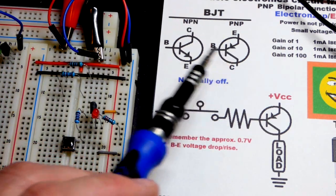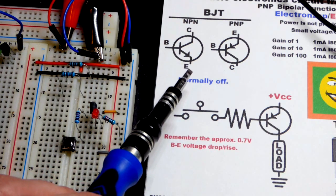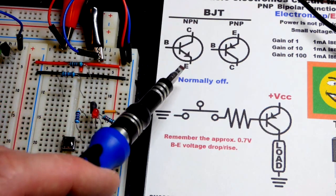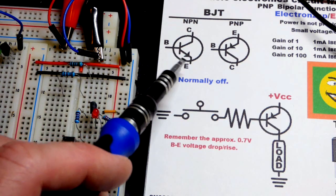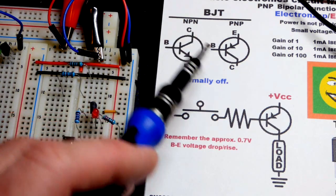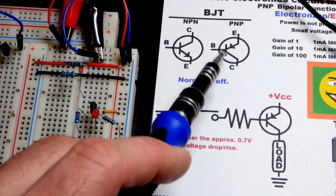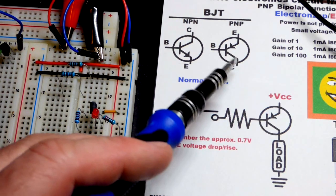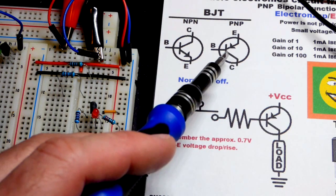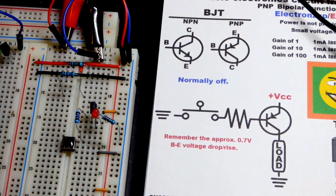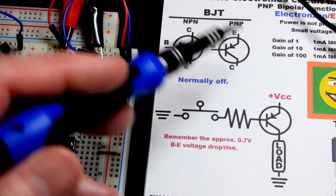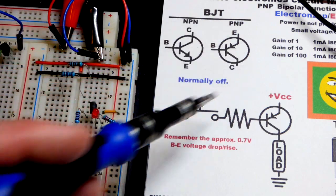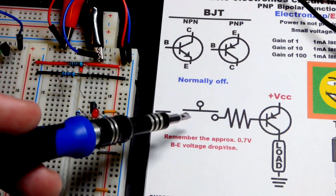You can see with the emitter here, for the NPN Bipolar Junction Transistor, on the schematic symbol, the emitter arrow is not pointing in. That's one way to think of NPN, whereas the PNP transistor is pointing in. The emitter could be down here, it would still be pointing in towards the base. So you can swirl this or flip it however you want to fit a schematic.